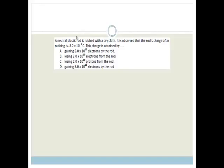Moving on. A neutral plastic rod is rubbed with a dry cloth. It observed that the rod's charge after rubbing is minus 3.2 times by 10 to the negative 9 coulombs. This charge is obtained by. It says it is a neutral plastic rod. So it was neutral. Now its charge is minus 3. So what has happened? It has become more negative. So if it has become more negative, do you agree that it has gained electrons? Anything where it says losing electrons we can cross out. So it's gained electrons.